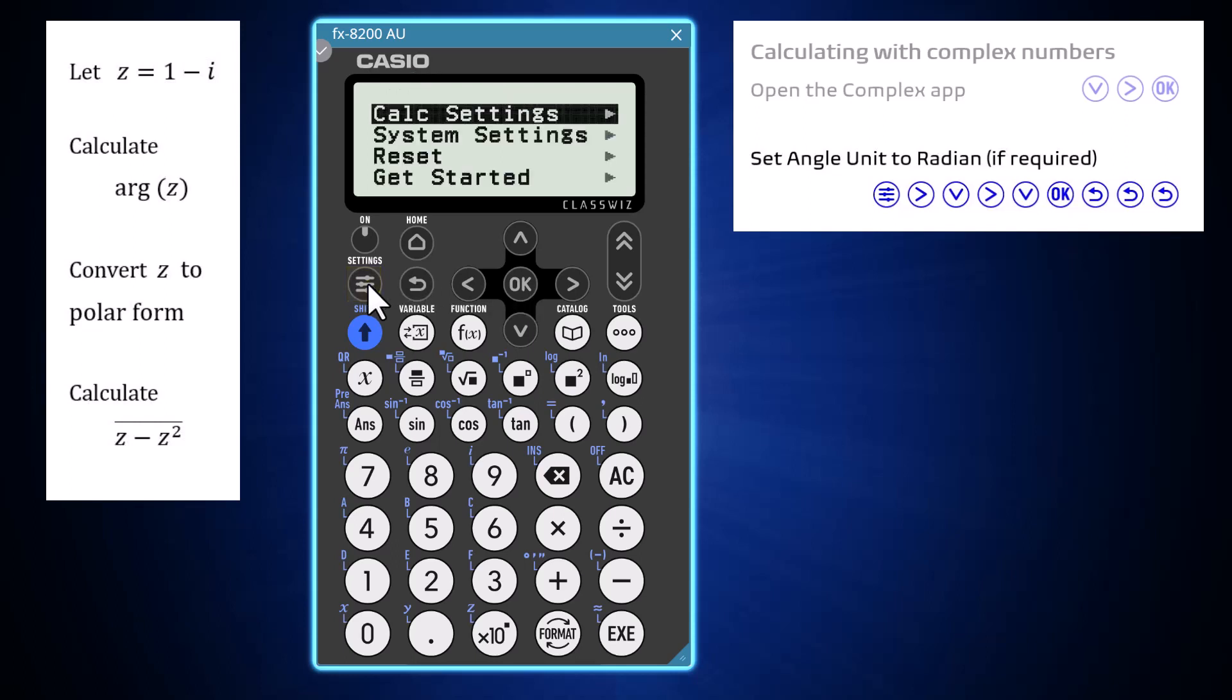press the settings key, arrow right to open the calculation settings, arrow down and right to open the angle unit settings, arrow down to radians, and select it by pressing OK. This done, use the back arrows to exit the settings.